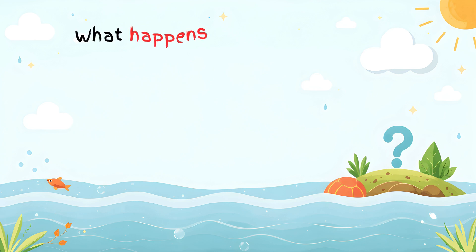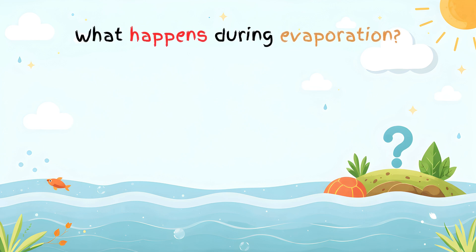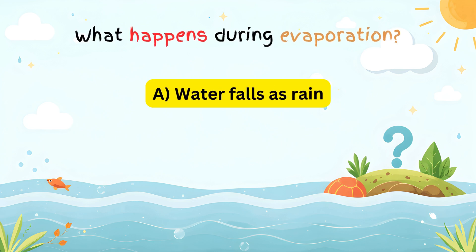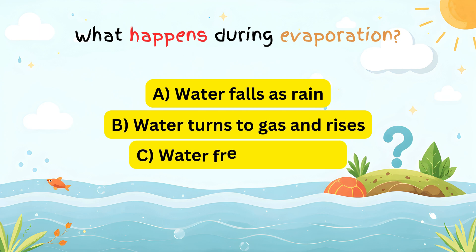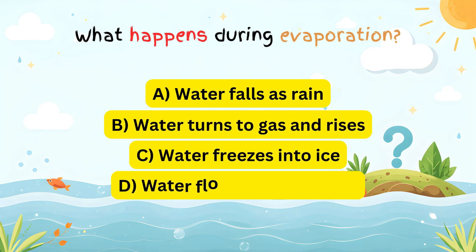What happens during evaporation? A) Water falls as rain. B) Water turns to gas and rises. C) Water freezes into ice. D) Water flows back to rivers.